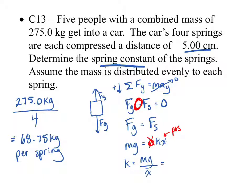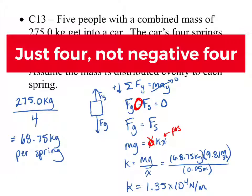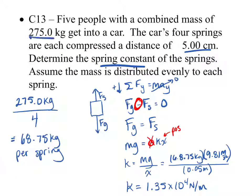So k = mg/x. Our mass was 68.75 kilograms — not 275 — because we're looking at the spring constant for one spring, and we assumed the mass is distributed evenly across four springs. G is always 9.81. X is 5 centimeters — make sure you convert to meters: 0.05 meters. And then we get a spring constant of 1.35 × 10⁴ newtons per meter. I gave it to three significant digits because we were only given three with the displacement measurement.